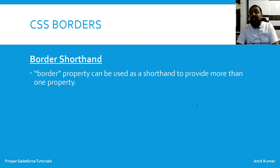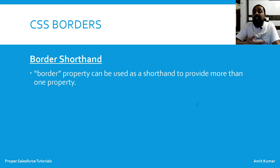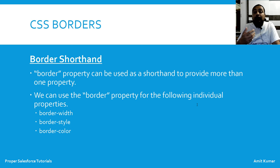Border shorthand is actually the border property itself. This single property can be used to provide more than one value. With the border property, you can specify border-width, border-style, and border-color together. Out of all three, border-style is the required property.